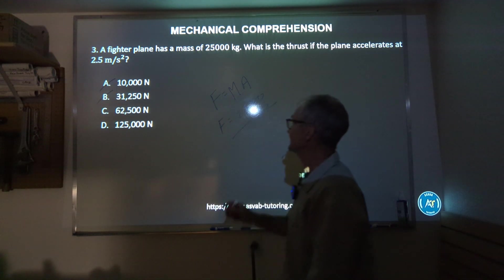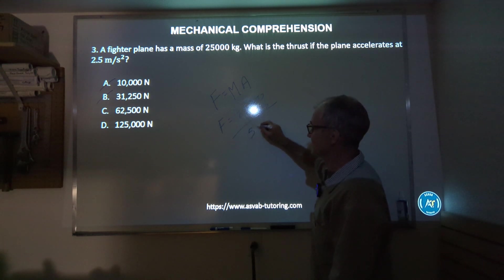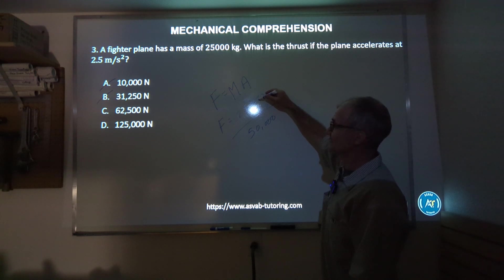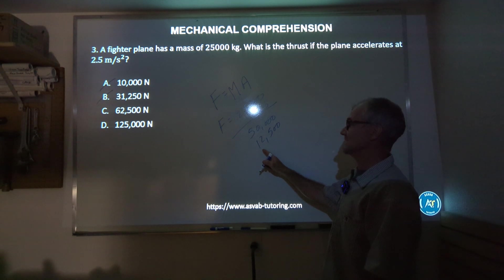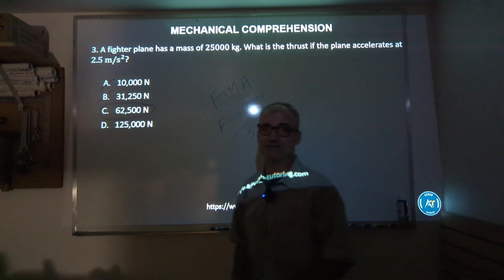10,000 is going to be way too low, 31,000 way too low. 2 times 25,000 is 50,000 and then the half, half of 25 is 12 and a half, and then 50 and the 12 and a half give me 62,500 newtons. Correct answer, answer C right there.